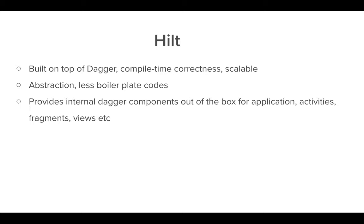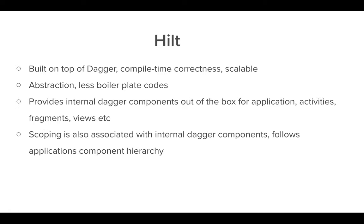So how does Hilt achieve less boilerplate? Basically, every place where we require dependencies — activities, fragments, view models — those will be provided out of the box by Hilt. You don't have to write a lot of components, sub-components, and all those things. Hilt also manages scoping by giving us certain tools to manage scopes in a very straightforward and easy way.